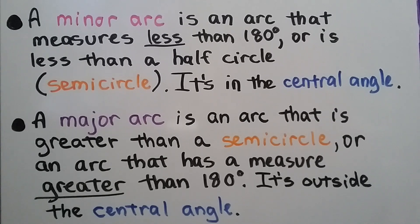A minor arc is an arc that measures less than 180 degrees or is less than a half circle, semicircle. It's in the central angle. A major arc is an arc that is greater than a semicircle or an arc that has a measure greater than 180 degrees. It's outside the central angle.